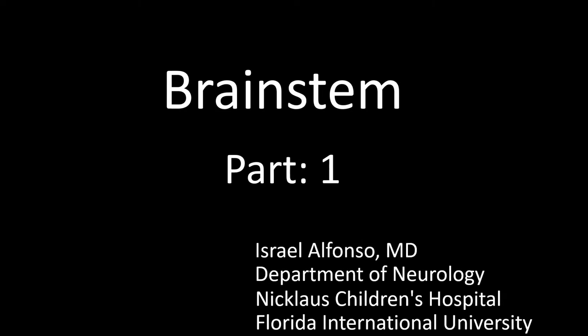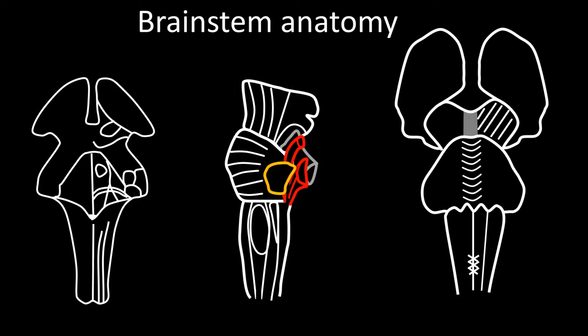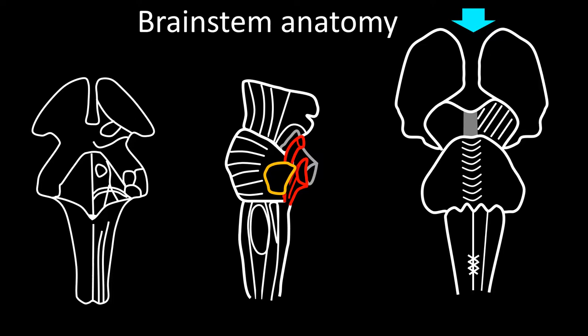This is the first in a series of talks on brainstem. It is intended as an introduction to neuroanatomy aimed for medical students and first-year neurology residents or fellows. You can see in this frame three views of the brainstem: a posterior view, a lateral view, and an anterior view. We are going to start by drawing and describing the posterior view. Try drawing this figure as I do, at the same time as I am doing them.